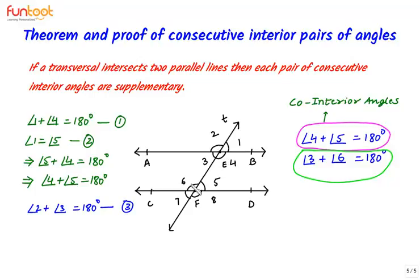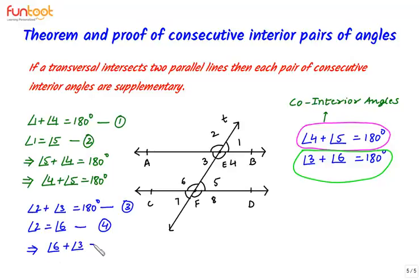By the corresponding angle axiom, we know that angle 2 equals angle 6 — call this equation 4. From equations 3 and 4, substituting angle 6 in place of angle 2 in equation 3, we get: angle 6 plus angle 3 equals 180 degrees, or angle 3 plus angle 6 equals 180 degrees.